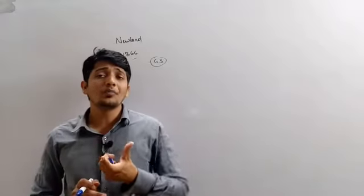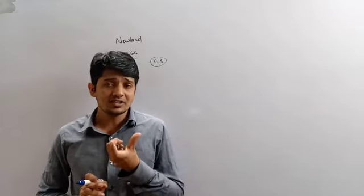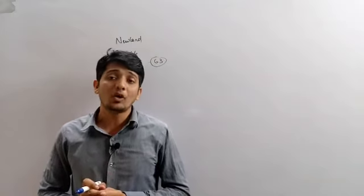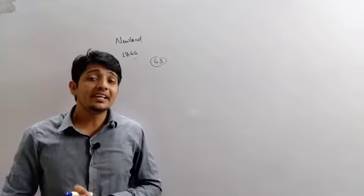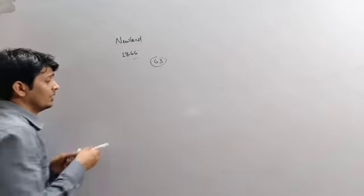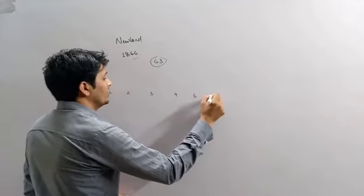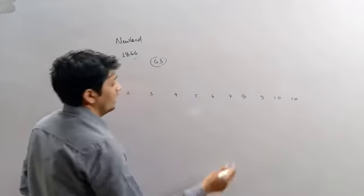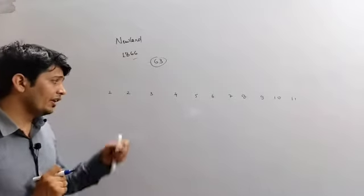He has related the atomic mass of the atom to their physical and chemical properties. He has told that all the elements, their physical and chemical properties are related to their atomic masses. That's why, Newland has arranged all the known elements in increasing order of their atomic masses. Like, first element is here, then second element, third element, fourth, fifth, sixth, seventh, eighth, ninth, tenth, eleventh, etc.